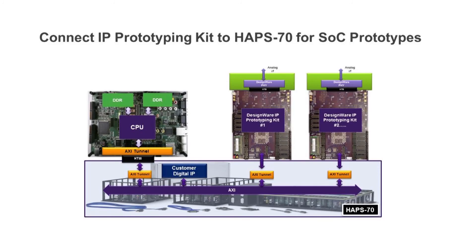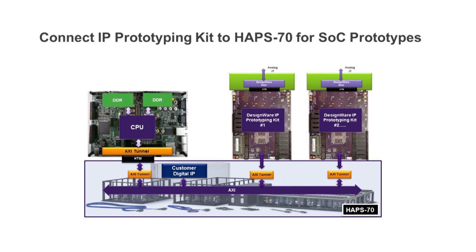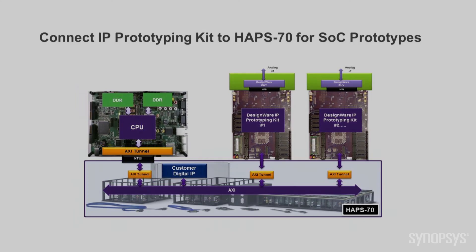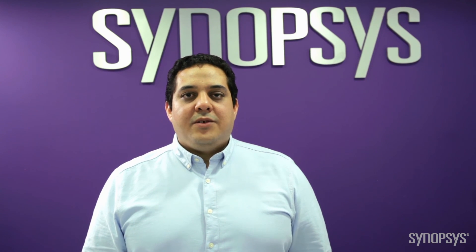After you have completed your software and hardware development, the IP prototyping kits can easily connect through an AXI tunnel to a HAPS 70 platform, creating a large SOC prototype. You have seen how Synopsys DesignWare IP prototyping kits for UMCTL2 provide immediate productivity for hardware engineers and software developers. Thank you for watching.